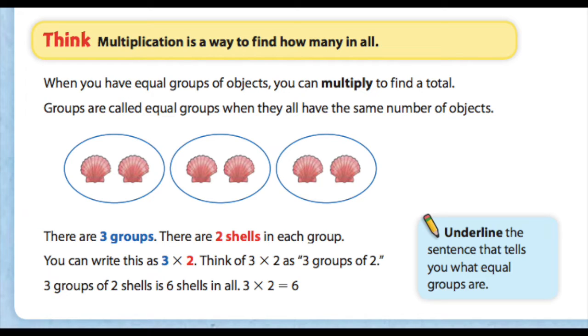So let's take a look at these shells. There are three groups because there are three circles, and there are two shells in each group. So that means we can write this as three times two. Think of three times two as three groups of two. Three groups of two shells is six shells in all, so three times two equals six.